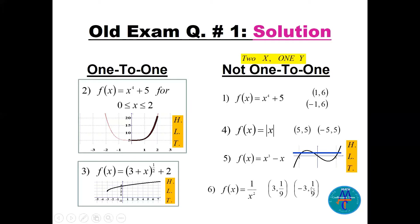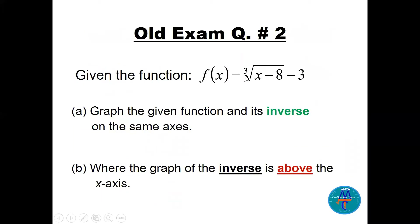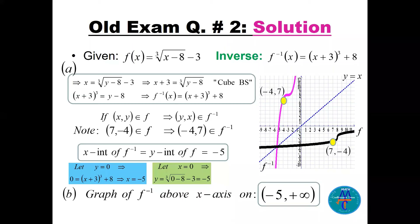Question number two: we have f(x) = cube root of (x − 8) − 3. Graph the function and its inverse where the graph of the inverse is above the x-axis. The function is a cube root shifted right eight units and down three. We find the inverse using the four steps: replace f(x) by y, interchange x and y, solve for y — giving f⁻¹(x) = (x + 3)³ + 8. To verify: f(7) = −4, so the point (7, −4) is on f, meaning (−4, 7) is on the inverse.